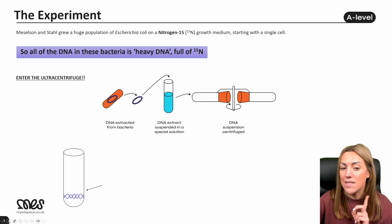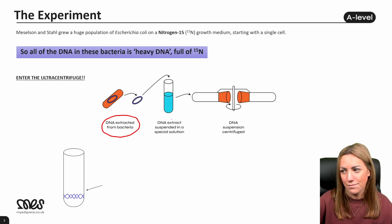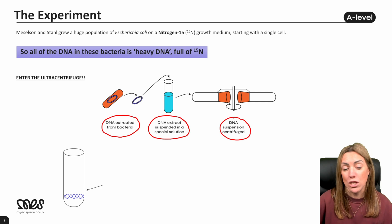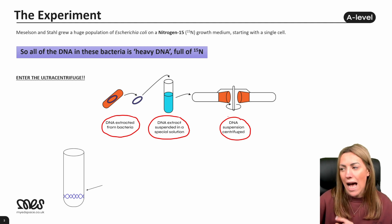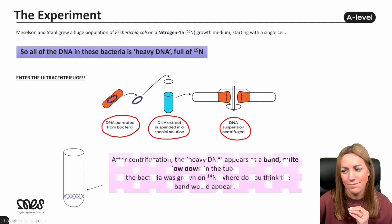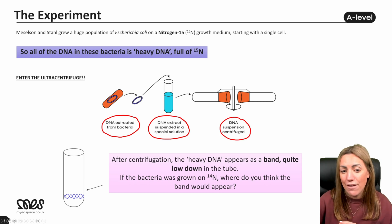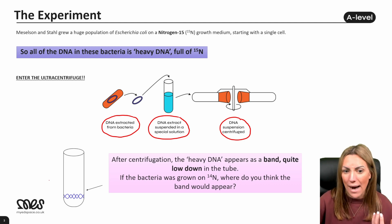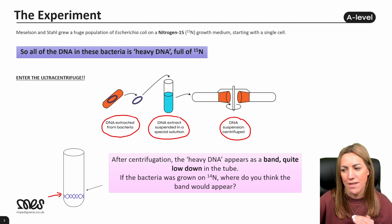After growing the population of E. coli in N15, they extracted the DNA, put it into a solution, and spun it in a centrifuge. The centrifuge spins really fast and can separate out organelles or DNA based on differences in density. After centrifugation, the heavy DNA — because it contained N15 and had greater mass — separated out as a band quite low down the centrifuge tube.